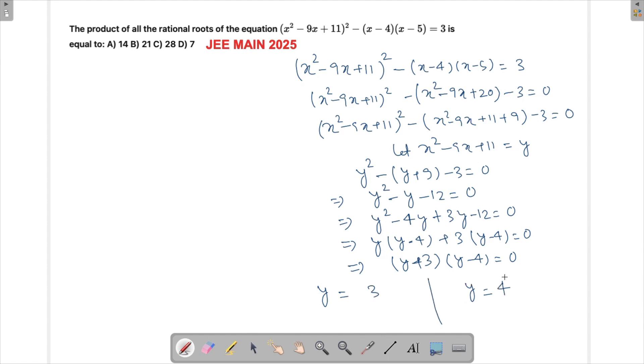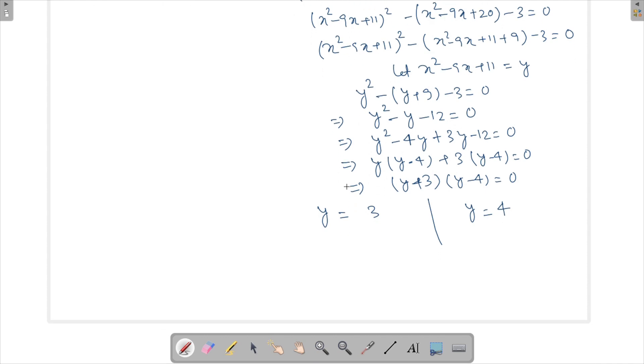And why did we write it like this is because we want to solve this further because this is what is my y. So x² - 9x + 11 = -3, and this is x² - 9x + 11 = 4. So this is -3.